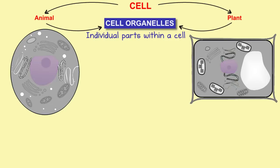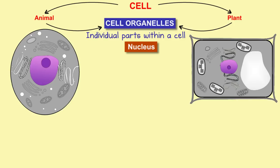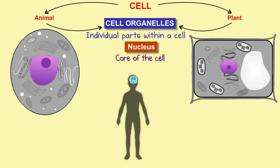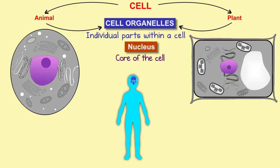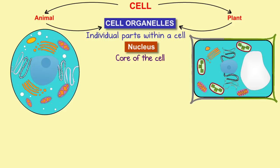Do you see this round shape structure present in the centre of the cell? Since it is present in the centre, this organelle is called as the nucleus, which means core of the cell. We all know a human brain controls the functioning in the body. In the similar way, the nucleus controls the functioning in the cell, so it won't be wrong to regard the nucleus as the brain of the cell.